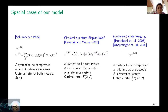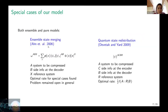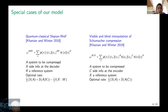We cover both Schumacher's models and the celebrated classical-quantum Slepian-Wolf problem by Devetak and Winter. There is state merging in both coherent and normal forms, ensemble state merging, and conventional state merging by Devetak and Winter. Also covered are another variation of classical-quantum Slepian-Wolf where a quantum system is compressed when the decoder has access to a classical register, and the interpolation between visible and blind Schumacher compression — all of these are special cases of the general model we defined.